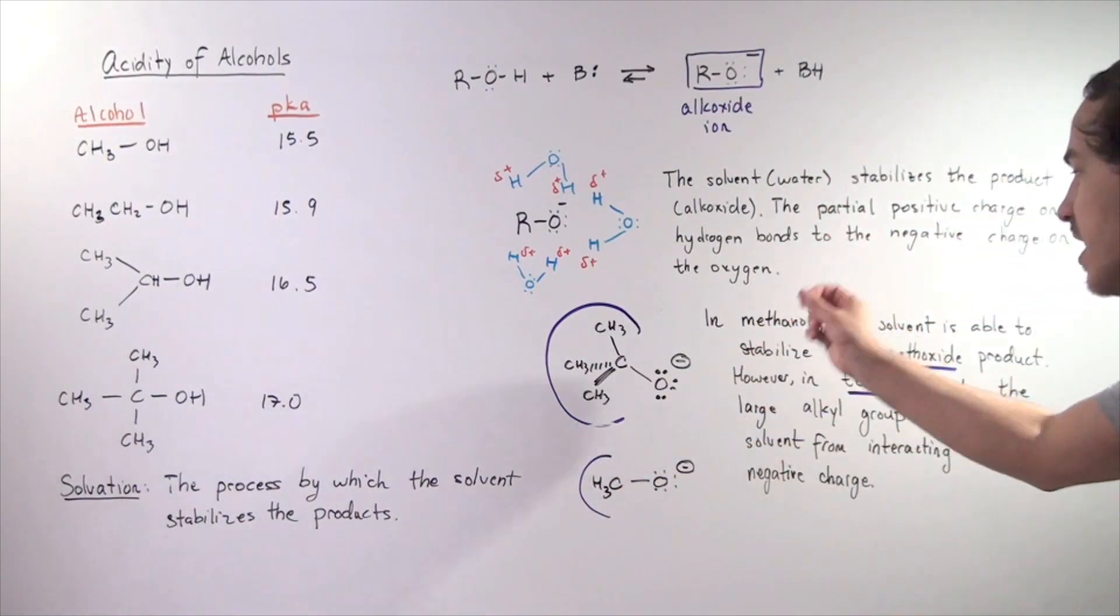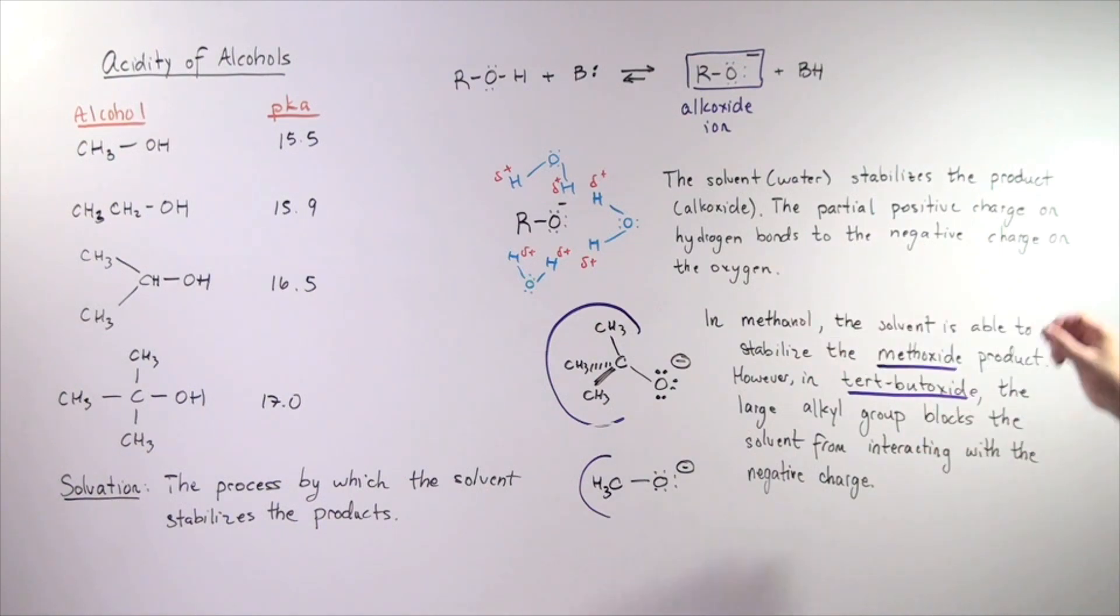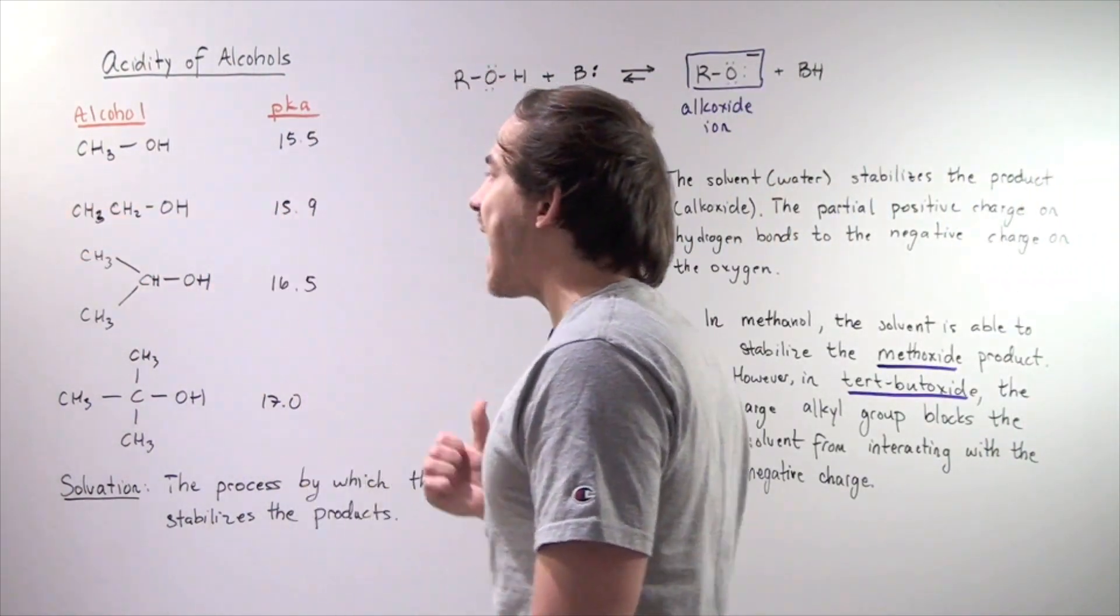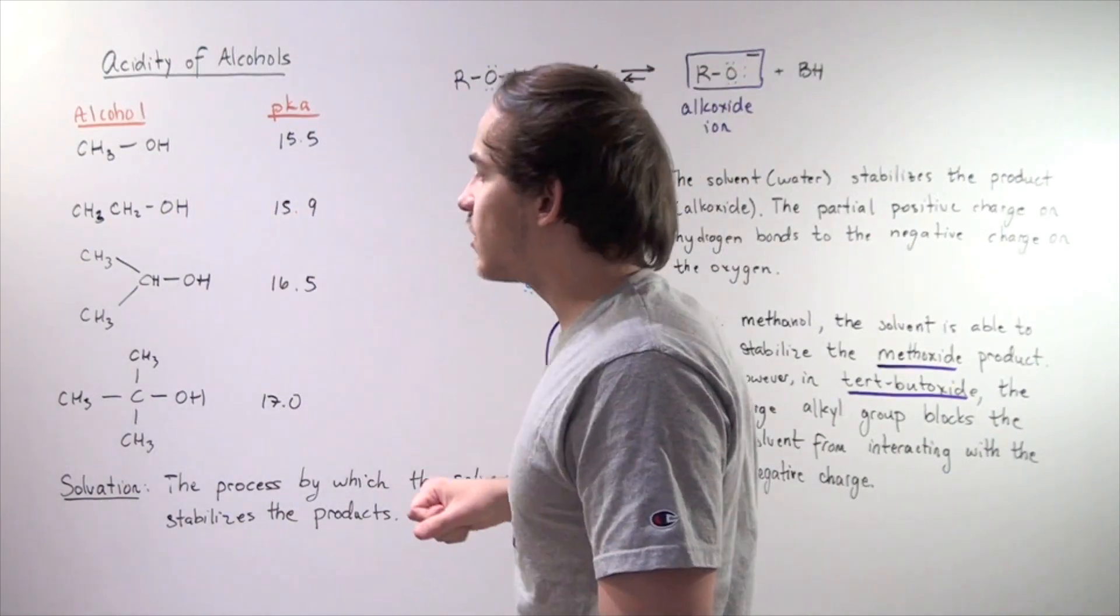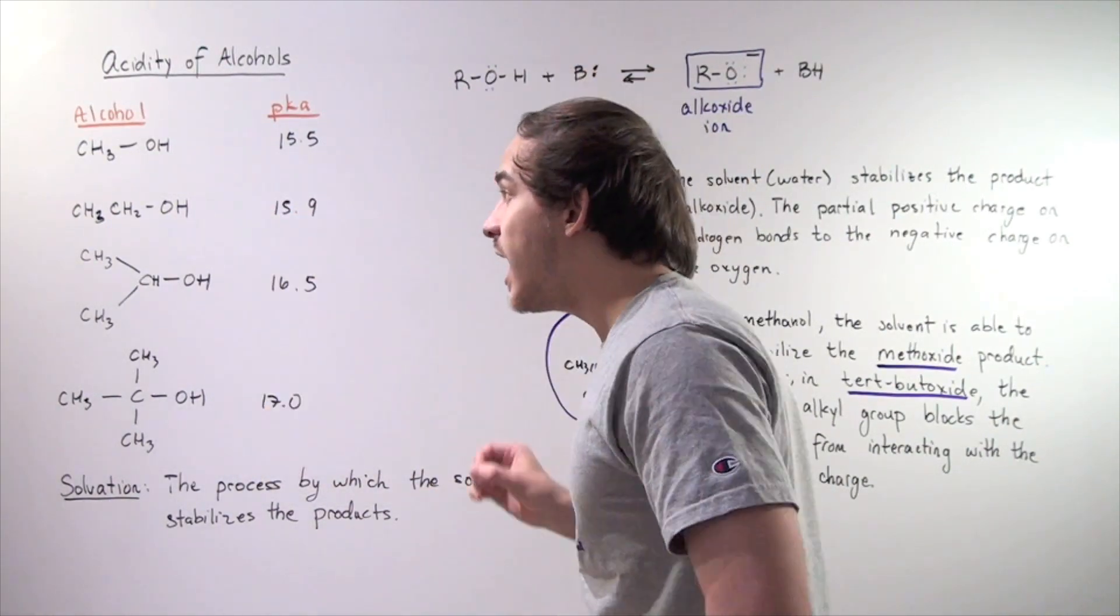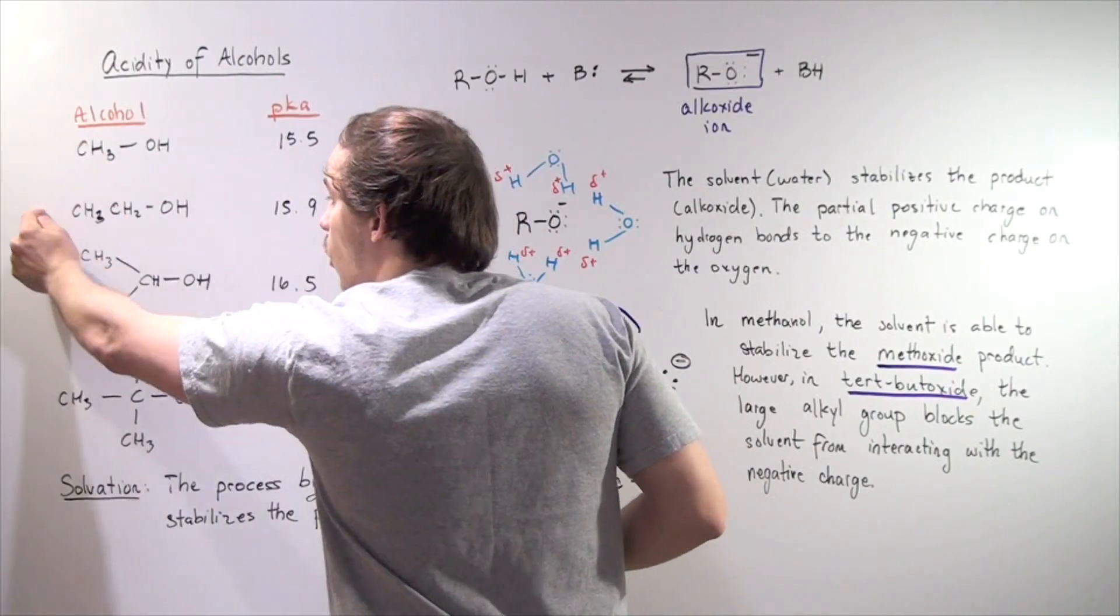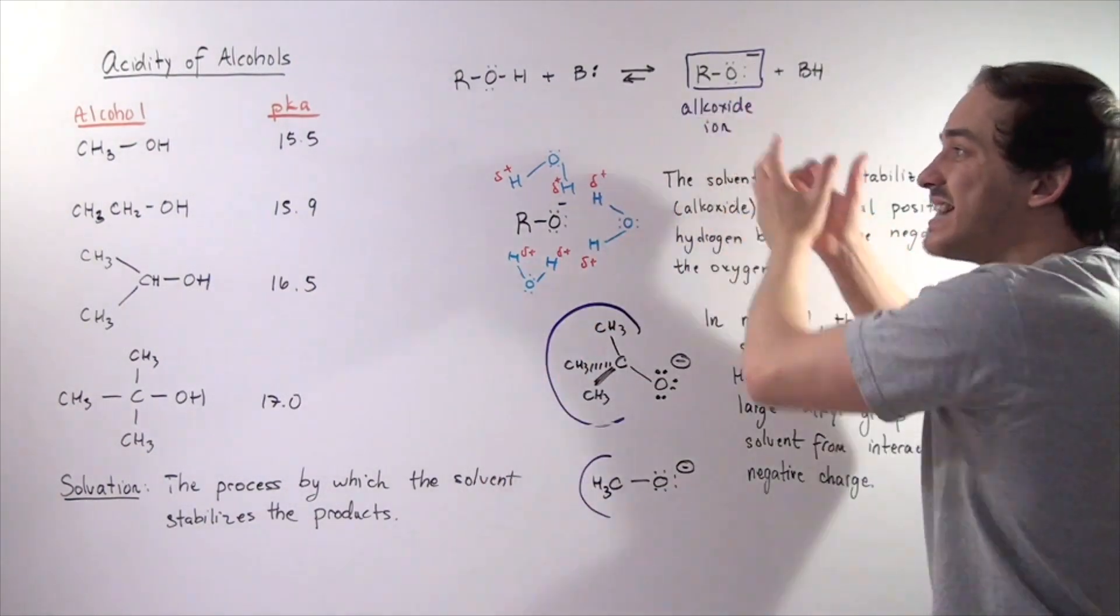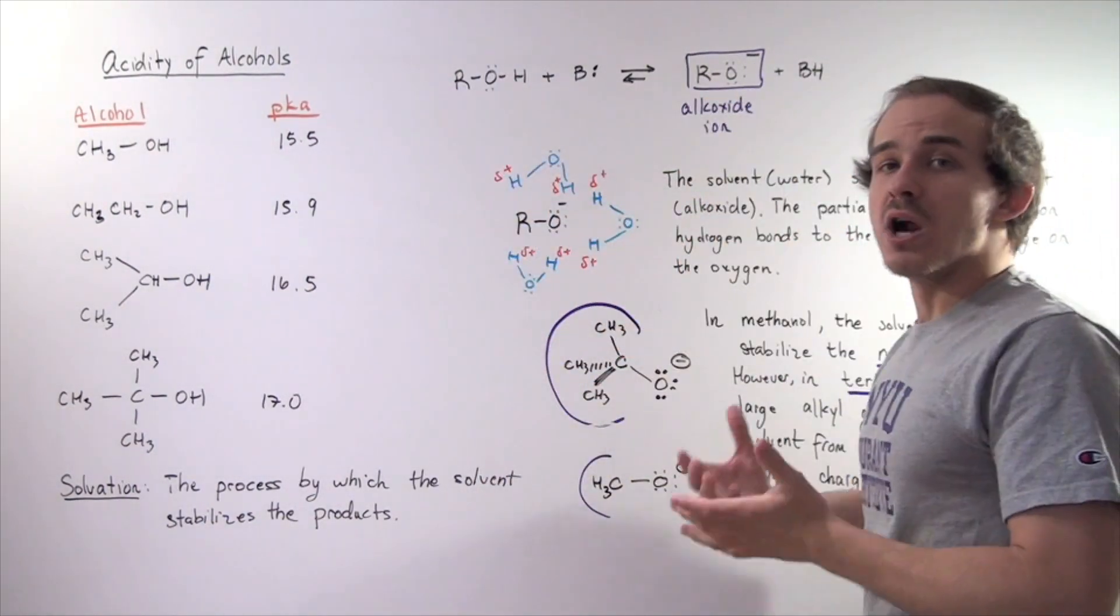So once again, in methanol, the solvent, in our case water, is able to stabilize the relatively small methoxide product. However, in tert-butoxide, the large alkyl groups block the solvent from interacting with the negative charge. And that's exactly why our methanol is a better acid than this alcohol, this alcohol, and this alcohol, because this group is the smallest out of all these groups. And because this is the smallest, our product is more stabilized and our reaction is more product-favored.